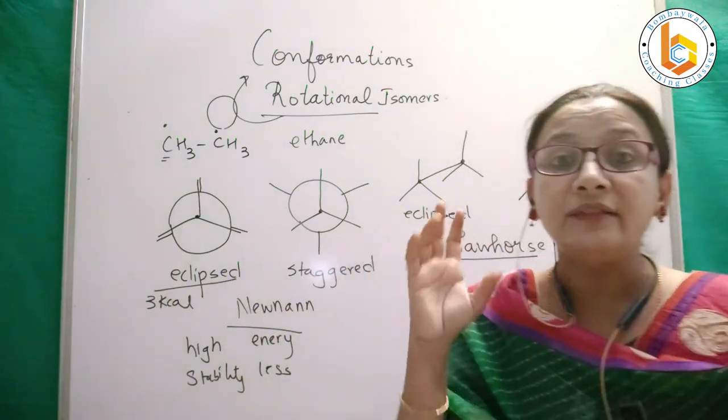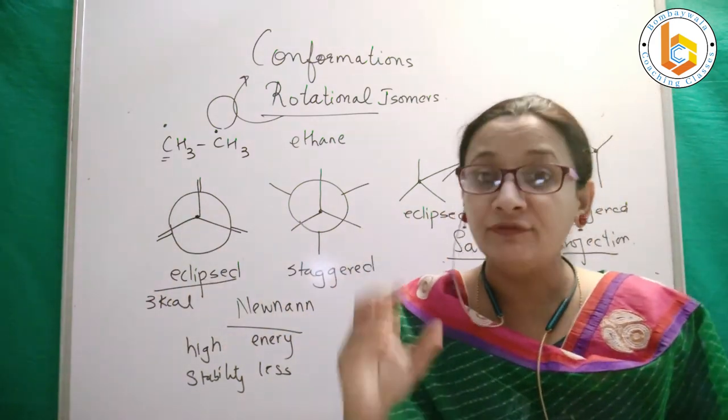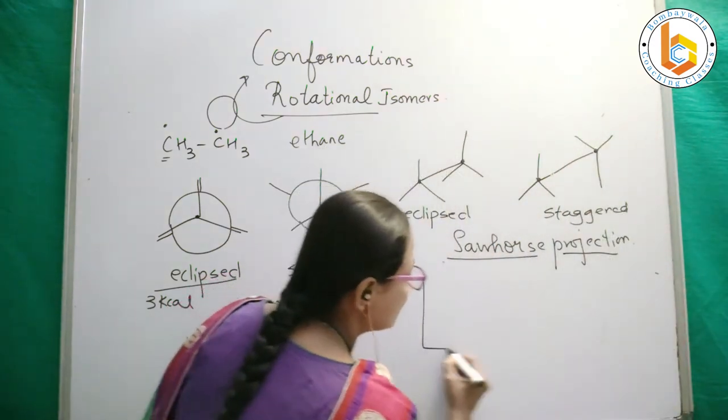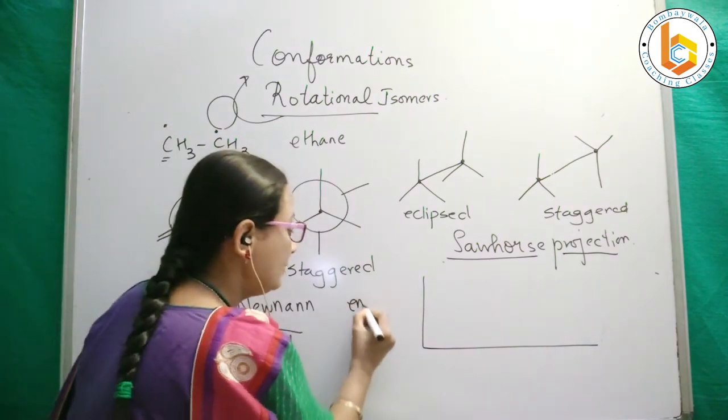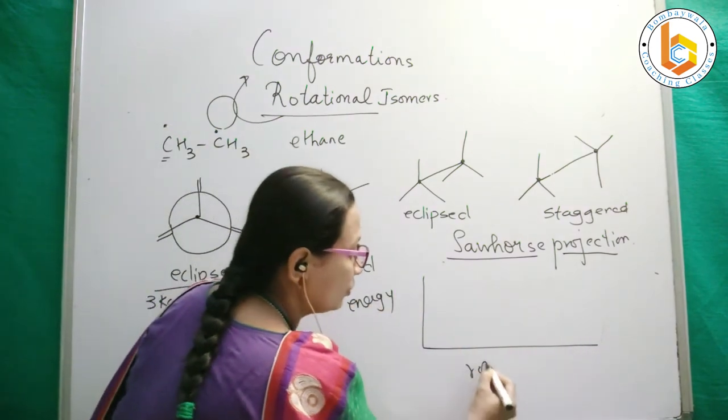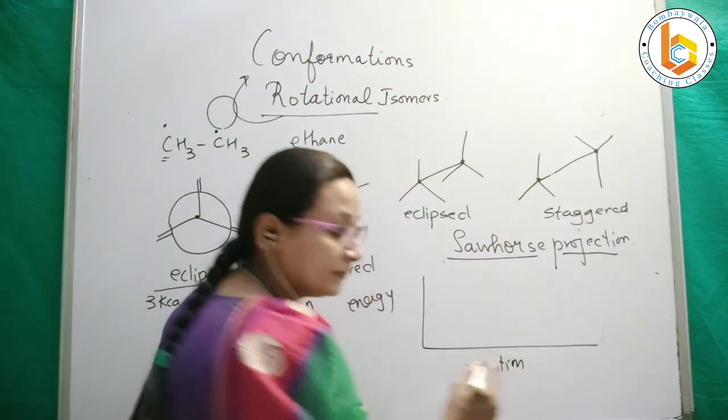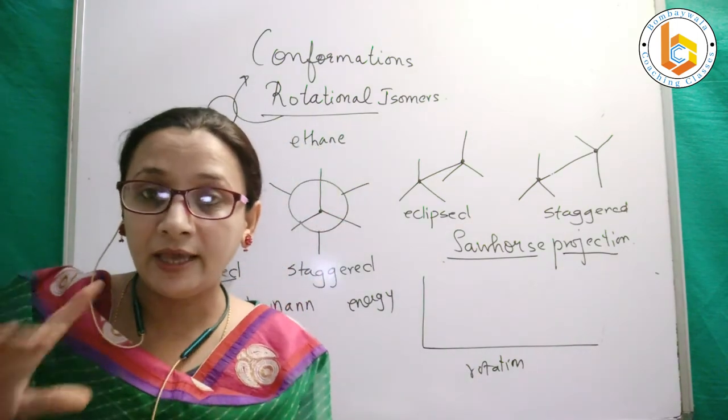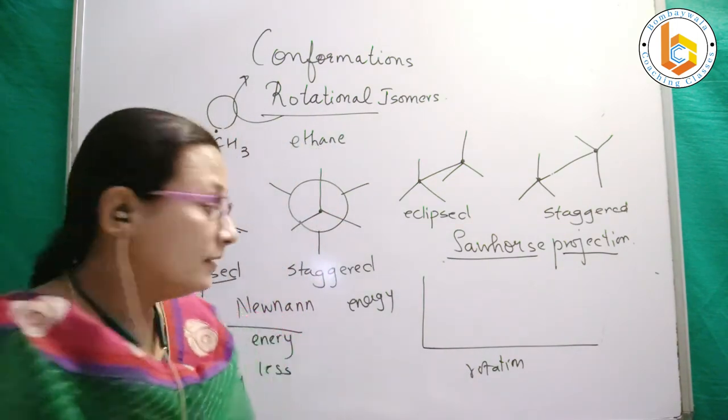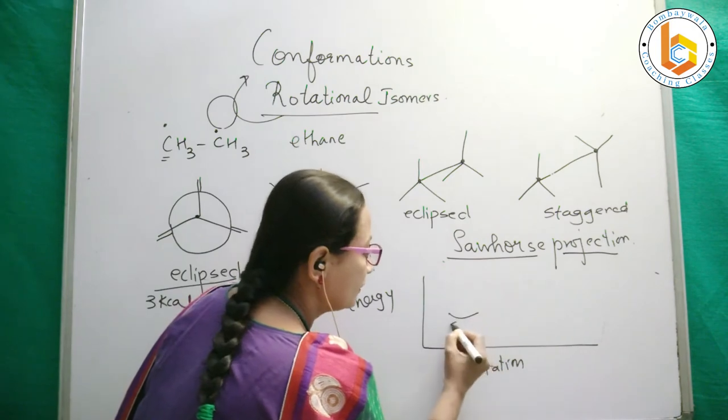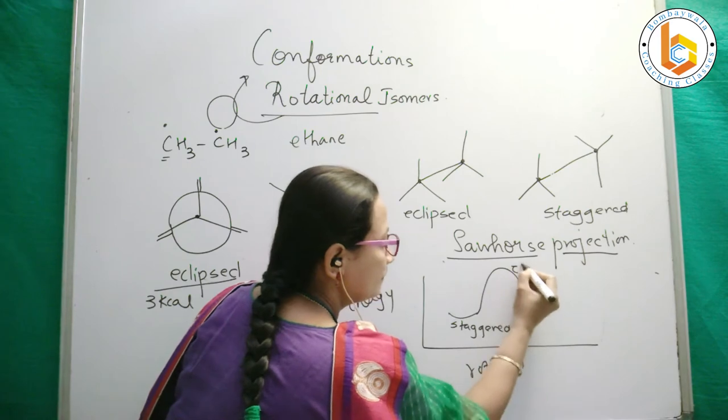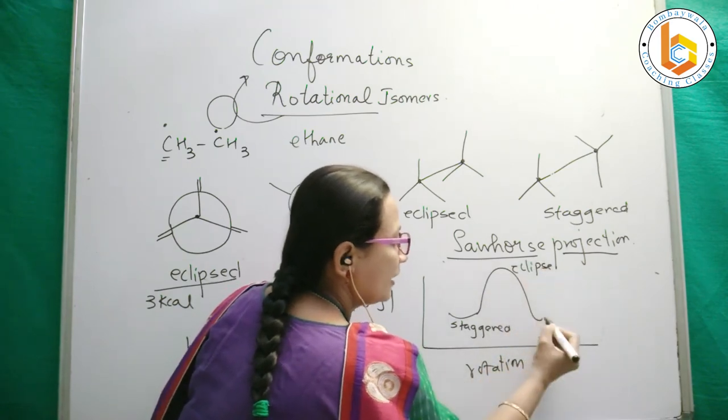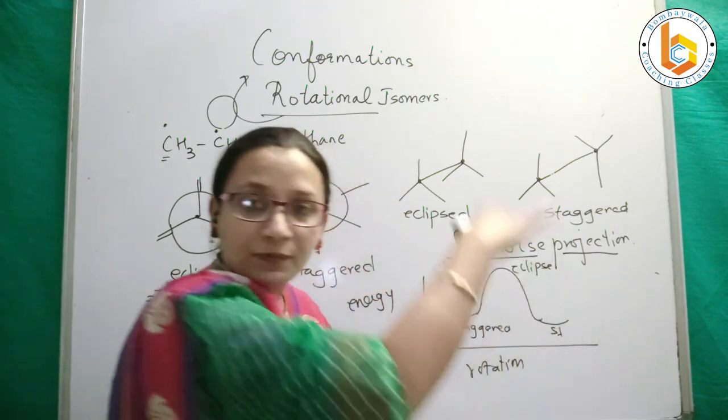Let us see the energy profile diagram which can represent the same. This is my graph—this is energy, and this is how rotational isomers are moving. This is the staggered form, then it becomes eclipsed, then eclipsed again comes back to staggered, then eclipsed.